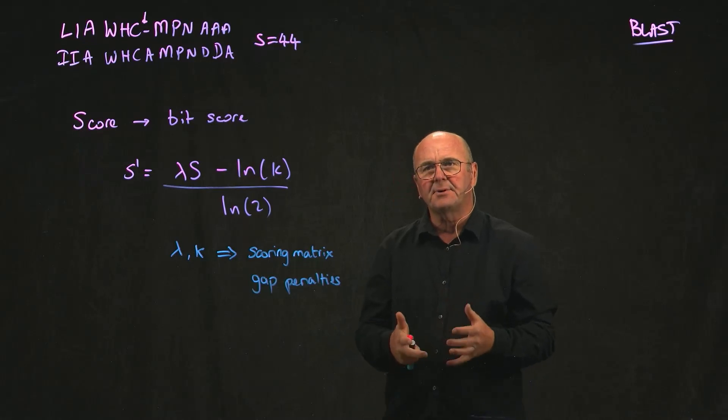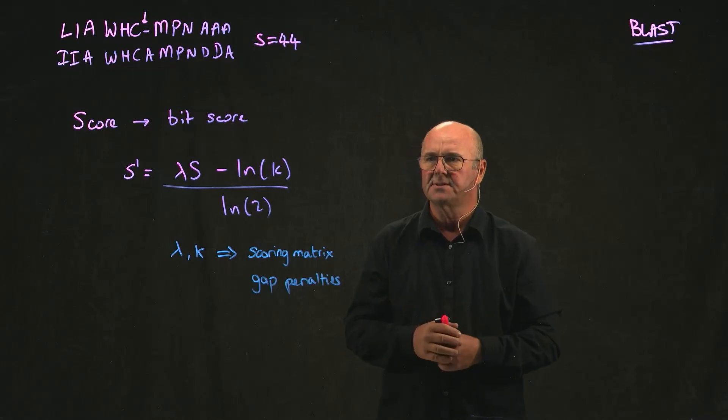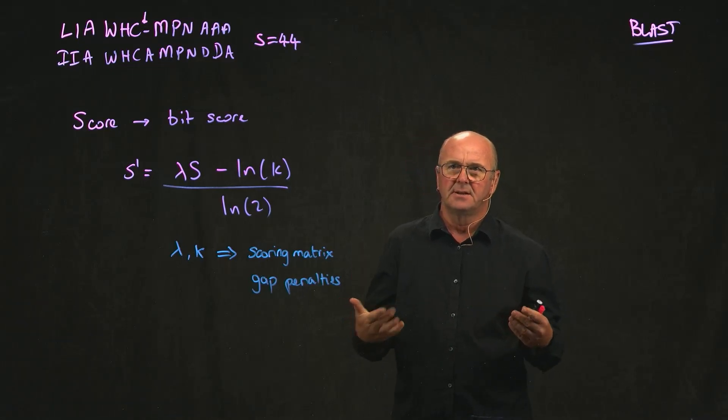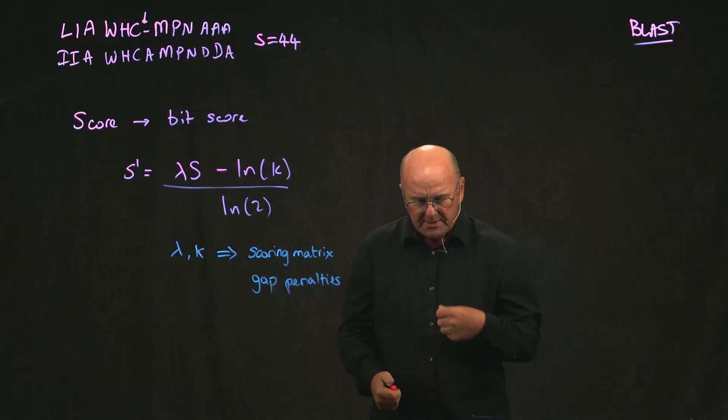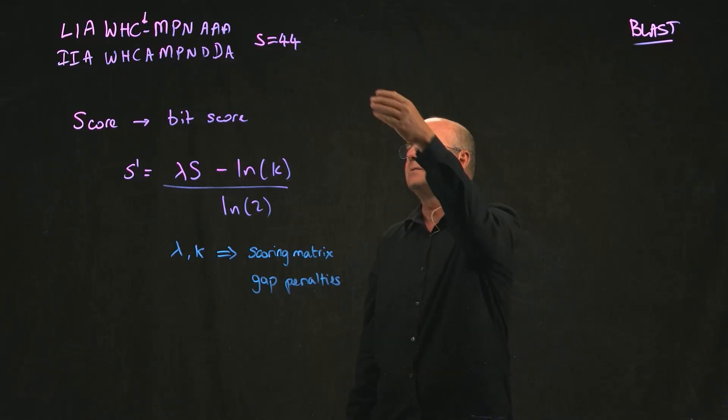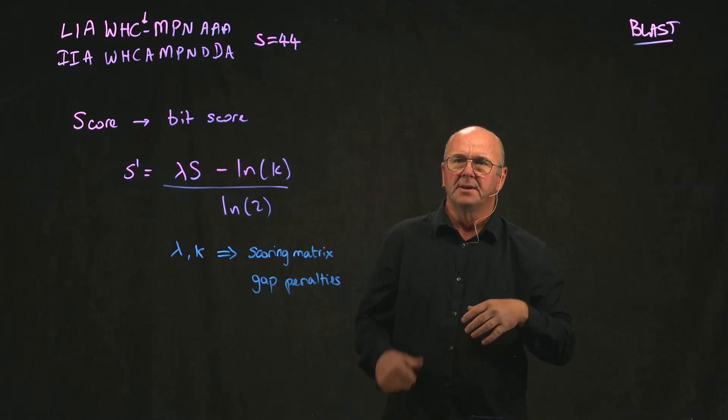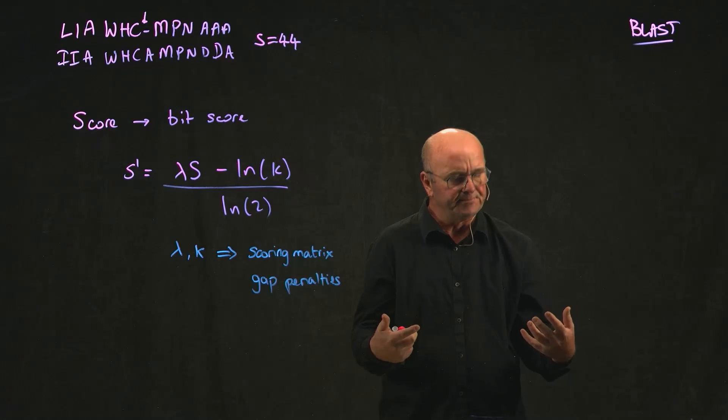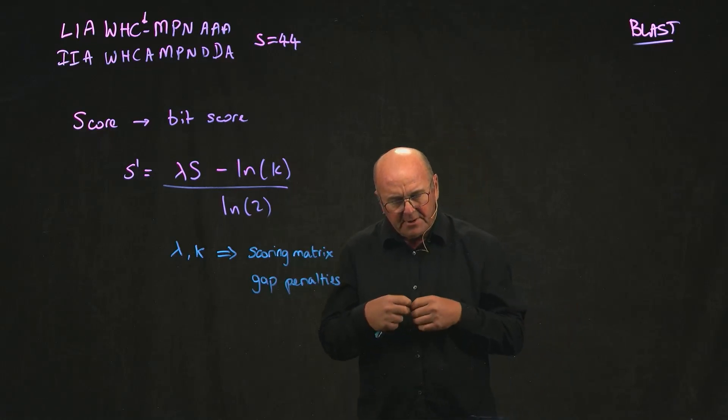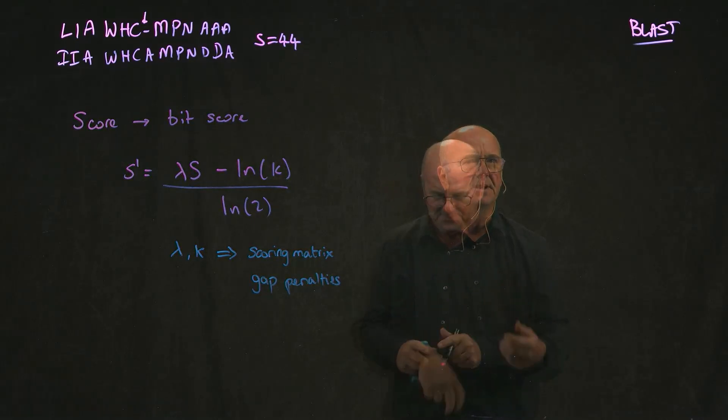However, we still have the problem that if we have a longer sequence query sequence or a longer database, then we're going to find a match just by chance. And so what we actually want to do is we don't want to normalize the score just based on our scoring matrix and our gap penalty. We want to normalize the score based on the length of the query and the length of the database. And if we do that, we basically can get a false positive rate or a false discovery rate, or kind of a number of errors that we'd anticipate having for each query.